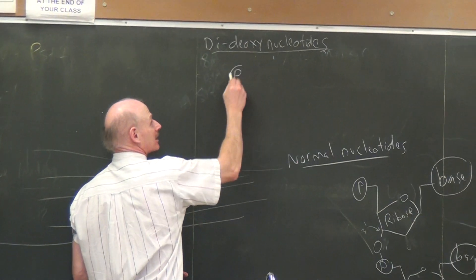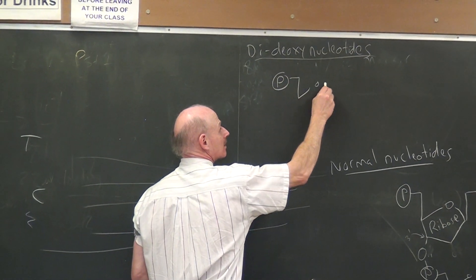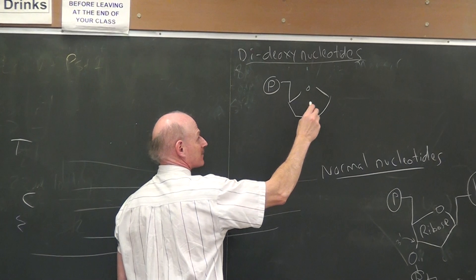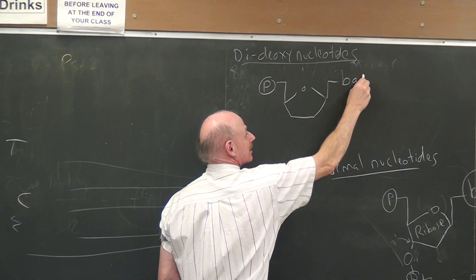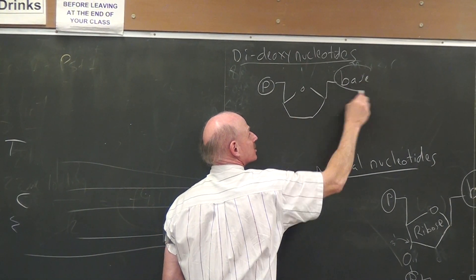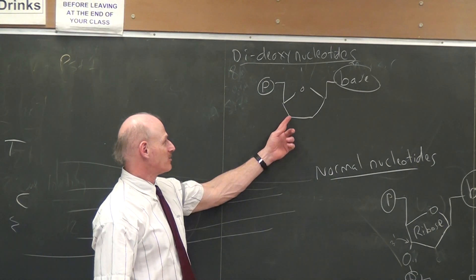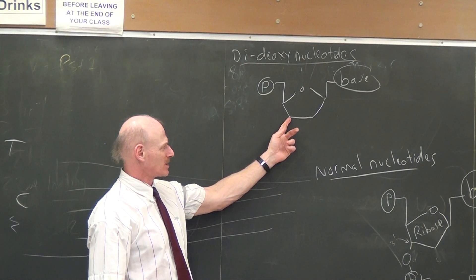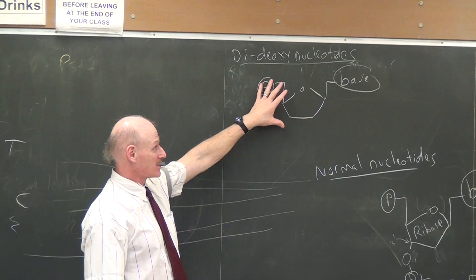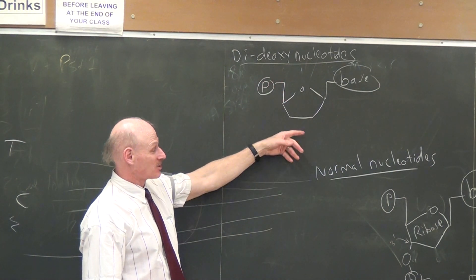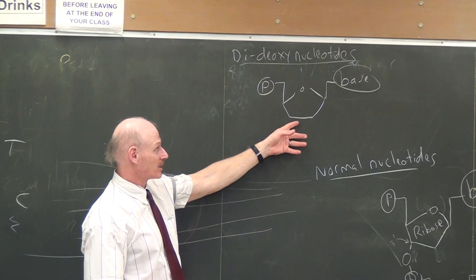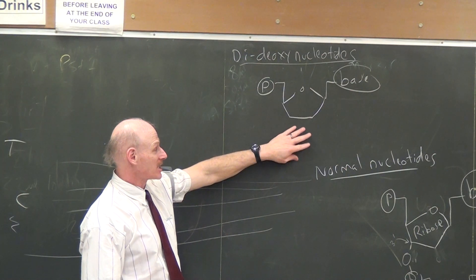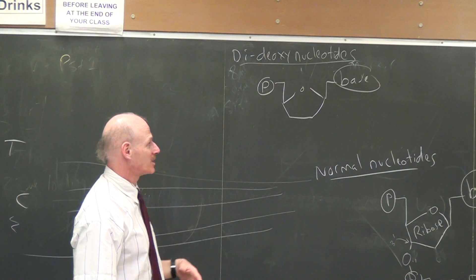So these dideoxynucleotides look like this. There's the ribose, there's the phosphate, there's their nitrogenous base, their G or A or T or C, but they do not have that three prime OH group right there, it's been artificially removed. And so these guys can't be linked to any other nucleotides, at least not at this end right here, they just don't have that hydroxyl group.